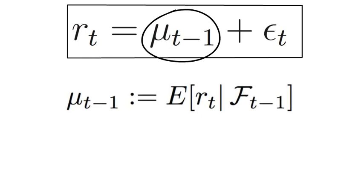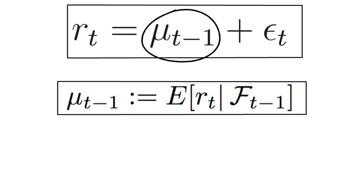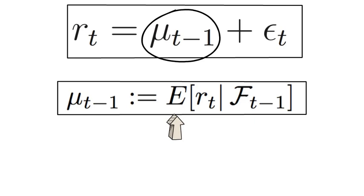Mathematically, we write that as follows. Now here, the capital E stands for the expectation operator. The vertical bar says that you condition the expectation about RT on something.